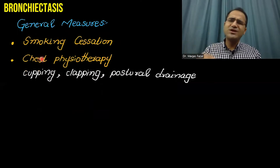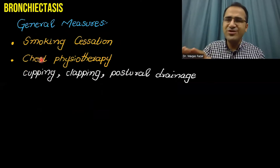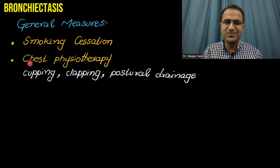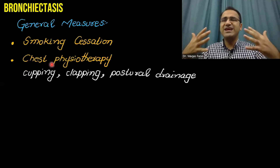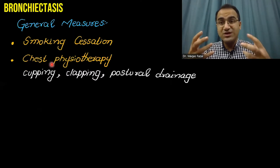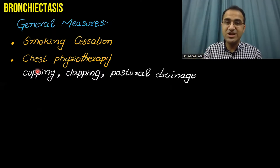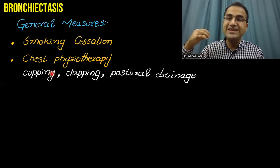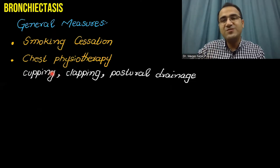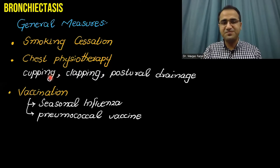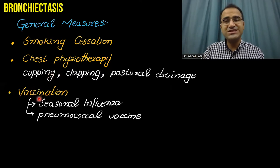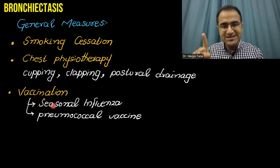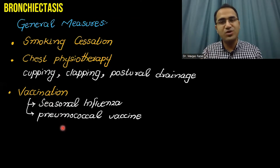General measures include smoking cessation — in almost all pulmonary diseases, smoking cessation is the first and most important intervention. These patients have excessive chest congestion due to mucus secretions, so chest physiotherapy — by cupping, clapping, and postural drainage — helps drain out the mucus. These patients are also at high risk of infections, so they must receive seasonal influenza vaccine and pneumococcal polysaccharide vaccine.